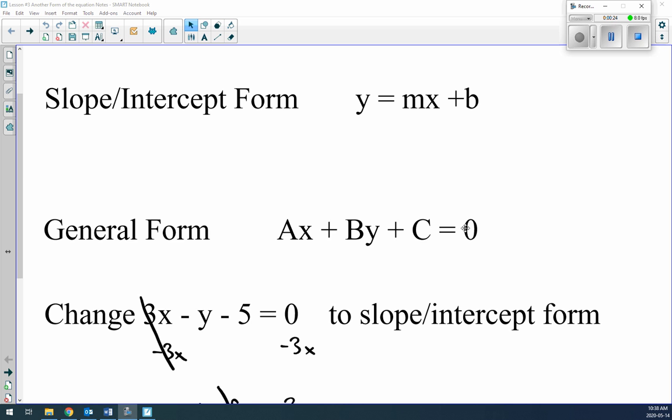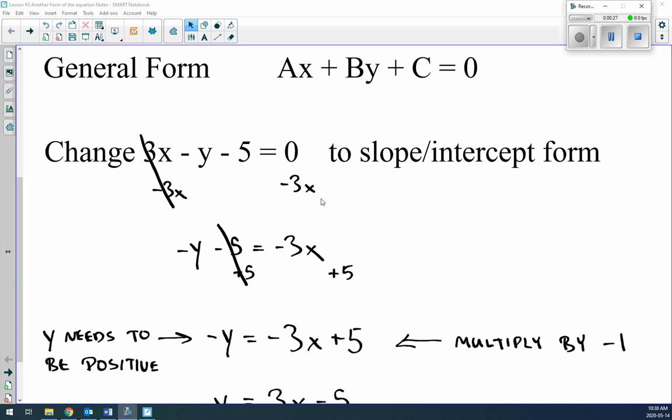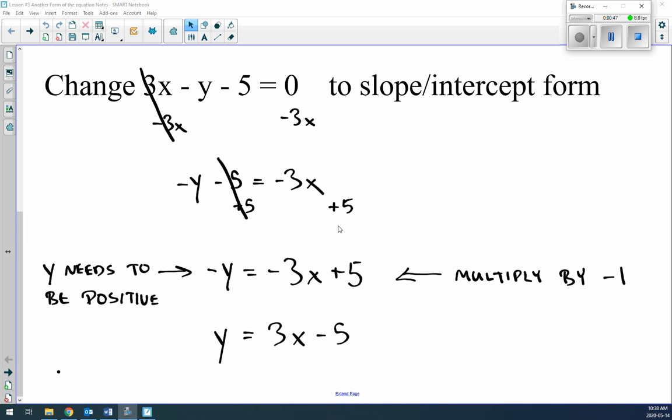Basically, all of it is on one side, and it's equal to zero. Let's first practice changing general form to slope-intercept form. You always want to get y by itself, and y has to be positive. So the first thing we're going to do is move the 3x. We subtract 3x from both sides. We end up with negative y minus 5 equals negative 3x. How do we get rid of the negative 5? We add 5 to both sides. Negative y equals negative 3x plus 5. But we said y has to be positive, so you could either multiply or divide by negative 1 to move the negative out of there. All the signs just change. We end up with y equals 3x minus 5. So 3 is our slope, negative 5 is our y-intercept.